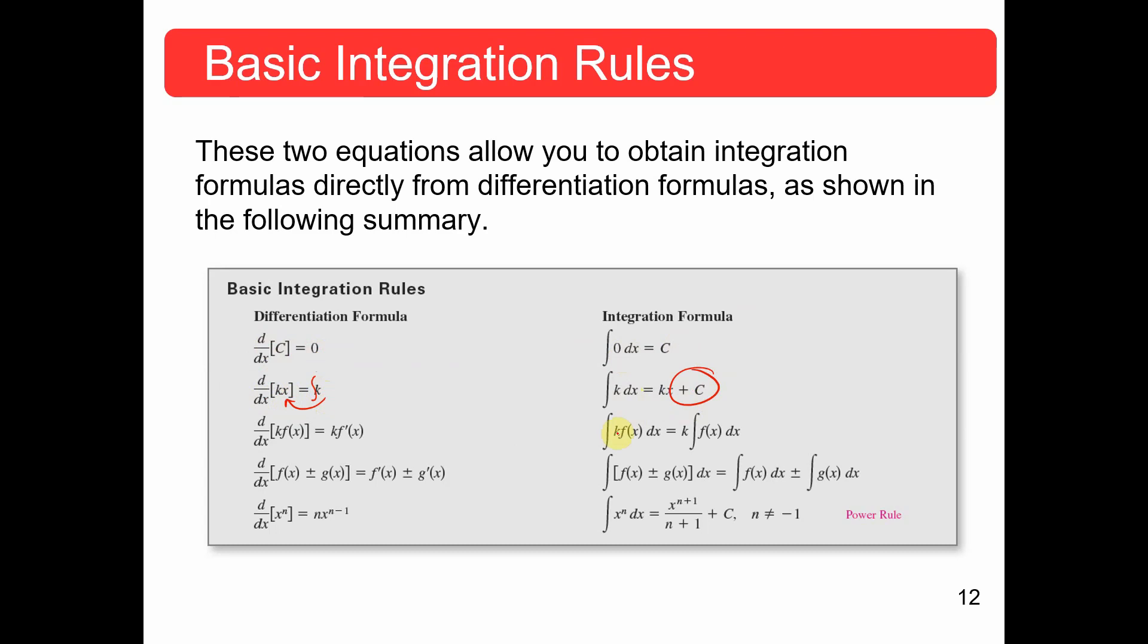Don't forget the plus c, that constant of integration is very important. The derivative of k times a function equals k times the derivative of the function. Therefore, the integral of k times a function equals k times the integral of that function. We can pull the k out - a constant can always be pulled out.